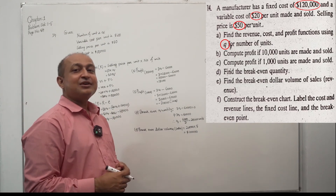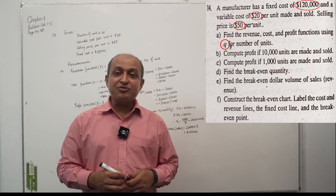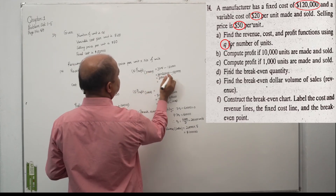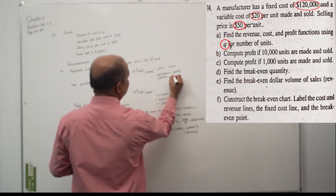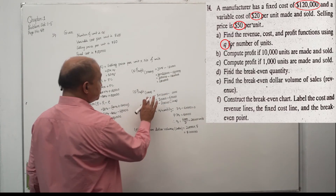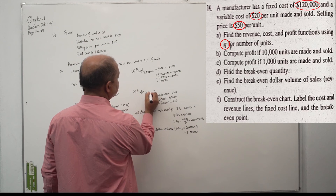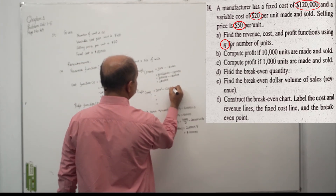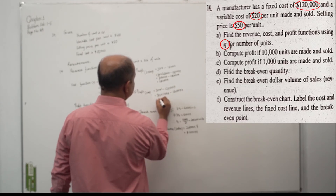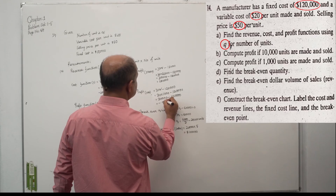Requirement B: profit if 10,000 units made and sold. Profit = 30 × 10,000 minus 1,20,000 equals 3,00,000 minus 1,20,000, which is 1,80,000 profit. Requirement C: profit for 1,000 units equals 30 × 1,000 minus 1,20,000 equals 30,000 minus 1,20,000, which equals minus 90,000 — a loss.